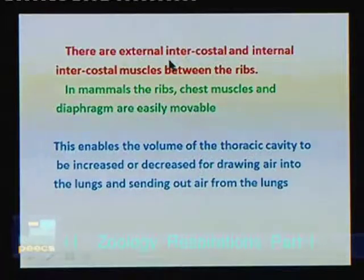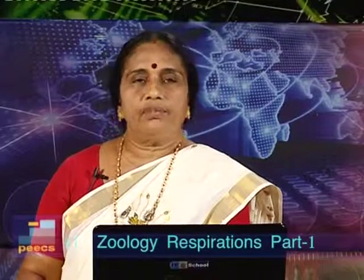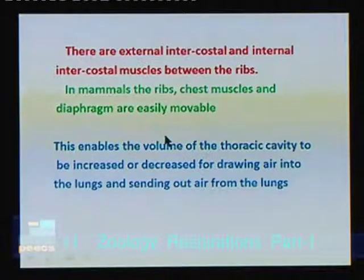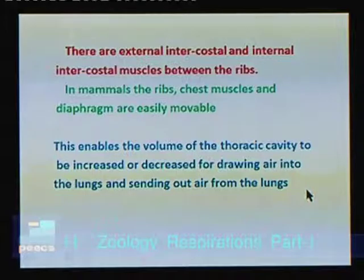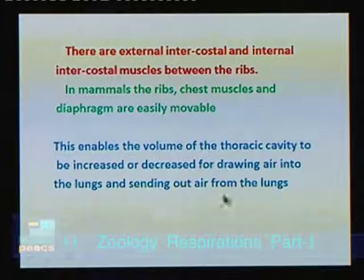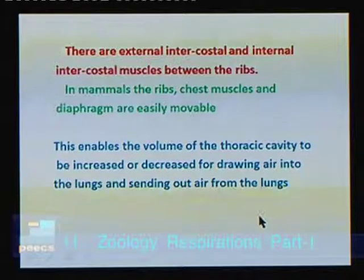There are external intercostal and internal intercostal muscles between the ribs. In mammals, the ribs, chest muscles, and diaphragm are easily movable, enabling the volume of the thoracic cavity to be increased or decreased for drawing air into the lungs and sending air out.